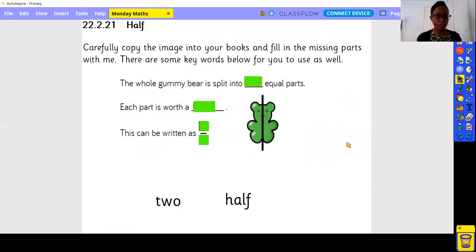In our book, you can see the dates there and the title you need. Can you carefully copy the image into your books? You don't have to do a gummy bear. If you want to do a circle, that's absolutely fine. But what's important is that you can split it in half because we really want to try and represent it.